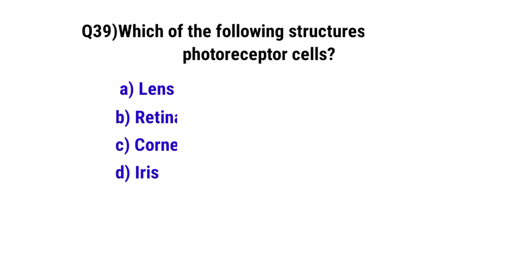Question number 39. Which of the following structures contains photoreceptor cells? The correct option is B. Retina.